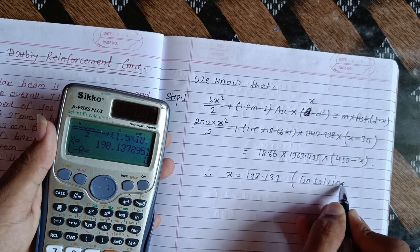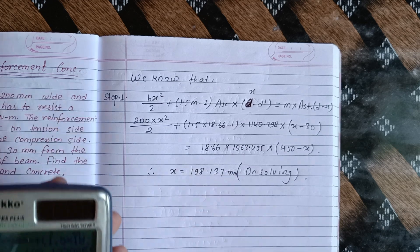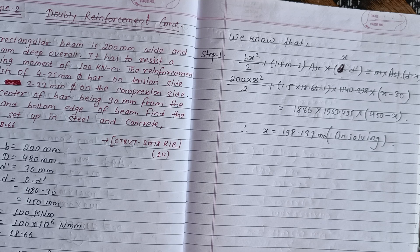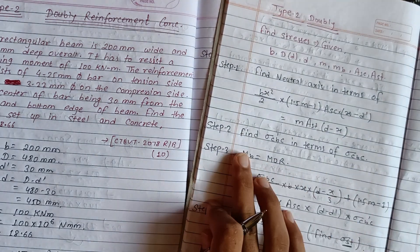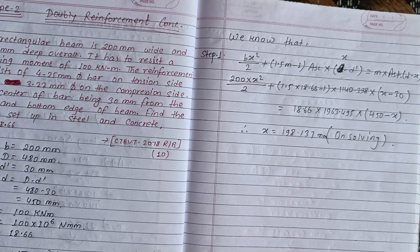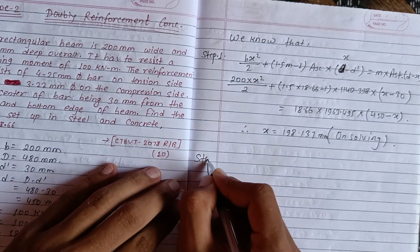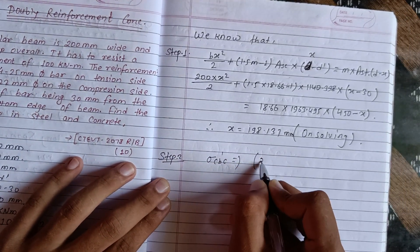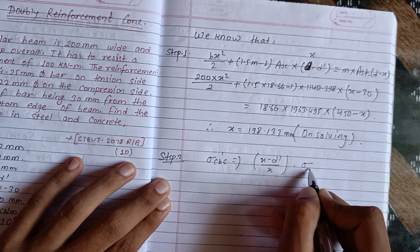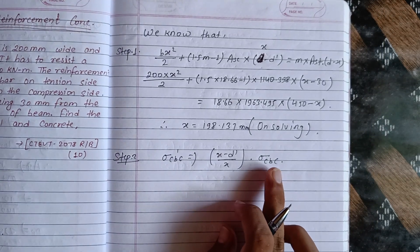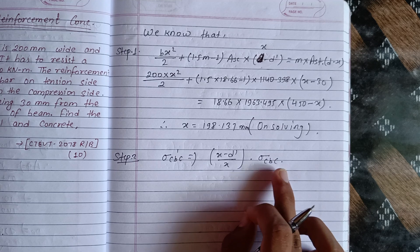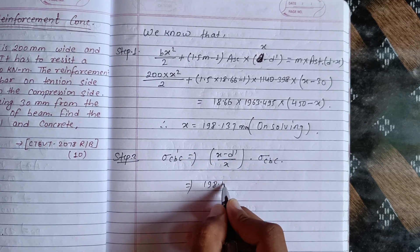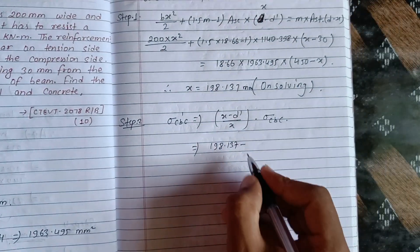So x is equal to 198.137 mm, which is our neutral axis. Step 2: Find sigma CBC dash in terms of sigma CBC. Using the formula: sigma CBC dash equals x minus d dash upon x into sigma CBC. Substituting x equals 198.137 minus d dash into sigma CBC, we get the value of sigma CBC dash.